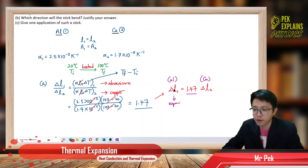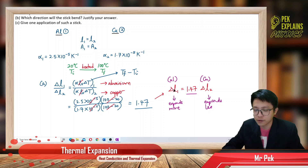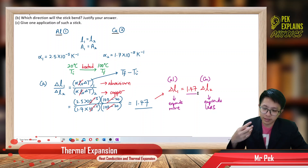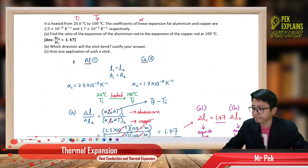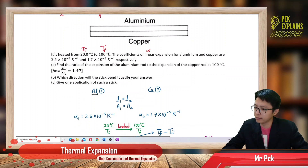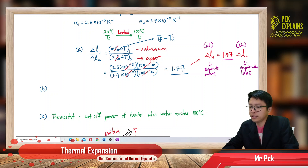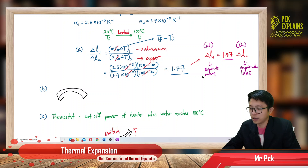Aluminum expands more, copper expands less. The expansion of aluminum is 1.47, or 47% more than the expansion of copper. So which direction will the stick bend? The stick will bend downward. At 100 degrees Celsius it will look like this — the top one is the aluminum and the bottom is the copper.